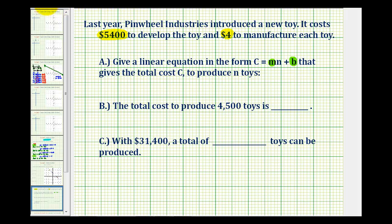So with this information, we can write the cost equation where C is going to be equal to $4 times the number of toys produced, so 4N, plus the fixed cost, which would be $5,400.